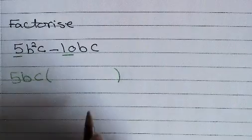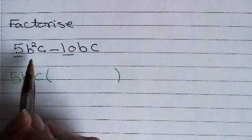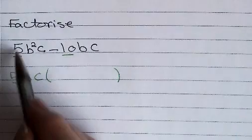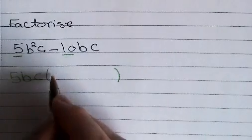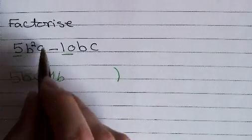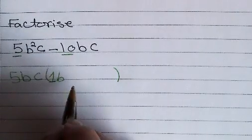How do we know what's inside the brackets? We are going to divide each term by the common factor. 5 divided by 5 equals 1. b squared divided by b equals b. c divided by c equals 1. We don't need to write that.